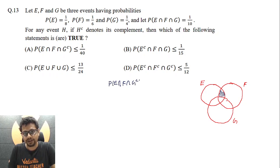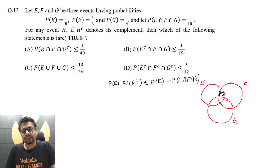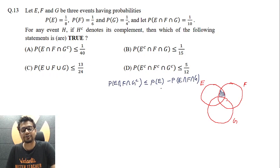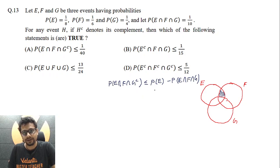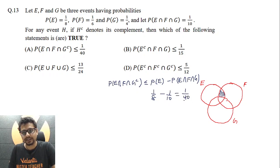I can say that probability of E intersection F intersection G-complement is definitely less than or equal to probability of E intersection F intersection G. We could have used probability of F minus probability of E intersection F intersection G, but I took probability of E because it is less than probability of F, giving a stricter constraint. This becomes probability of E being 1/8 minus probability of E intersection F intersection G being 1/10, giving 1/40. So this expression is less than or equal to 1/40. So option A is correct.